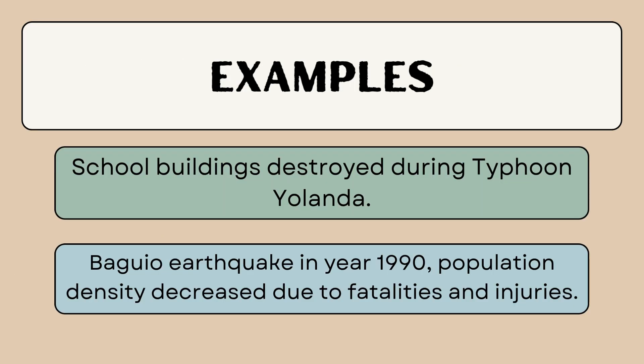During Typhoon Yolanda, school buildings at UP Visayas were destroyed due to poor structural resilience. In the 1990 Baguio earthquake, high population density contributed to the number of fatalities and injuries, leading to a decrease in population.